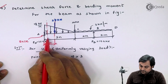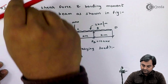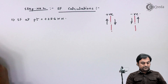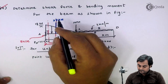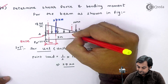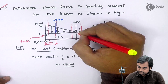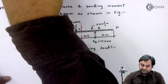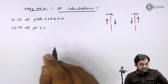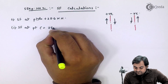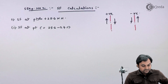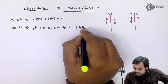To the left of the section just right of A, I have 25.6 kilonewton upward, which is positive, so SF at A equals plus 25.6 kilonewton. Taking the section to the left of C, SF at C equals 25.6 minus 27, which gives minus 1.4 kilonewton.